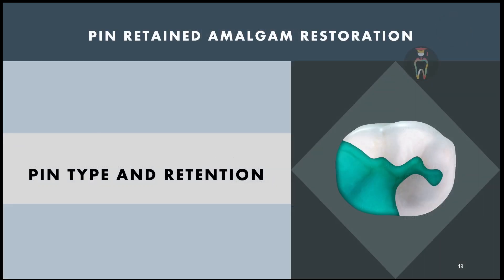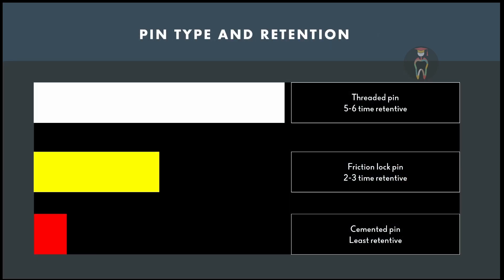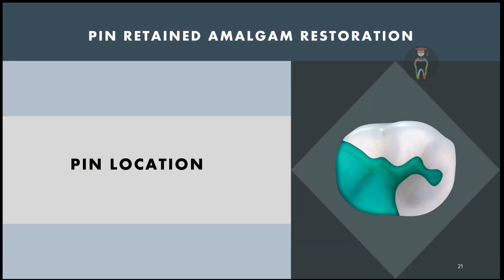Regarding pin type and retention: threaded pins are five to six times more retentive compared to friction lock pins, which are two to three times more retentive than cemented pins. Therefore, threaded pins are the most retentive type, cemented pins are the least retentive, and friction lock pins fall in between.